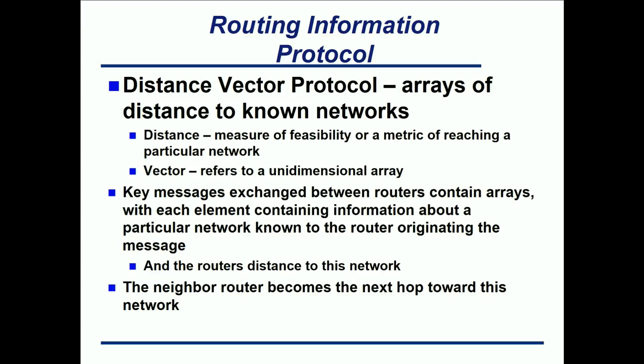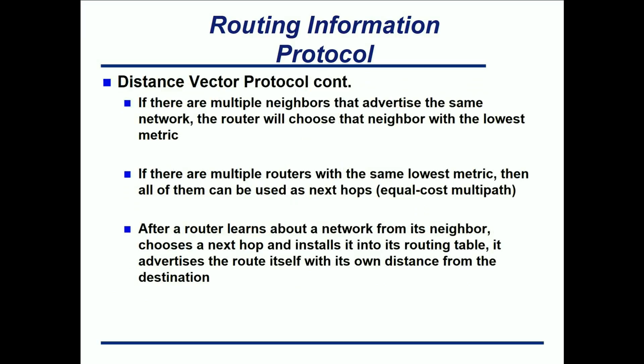At that level it's very basic. The advertising router who sends you that update or that network becomes the next hop, and that is what a distance vector routing router will use to send information towards that network — it will use that as a next hop.